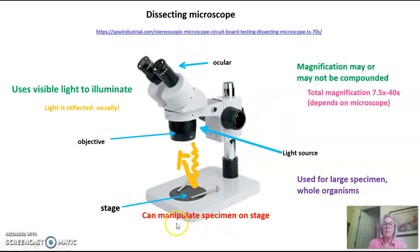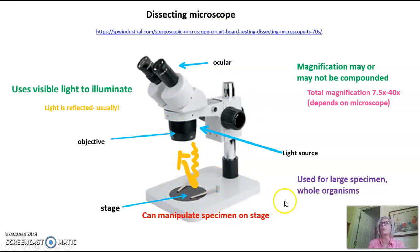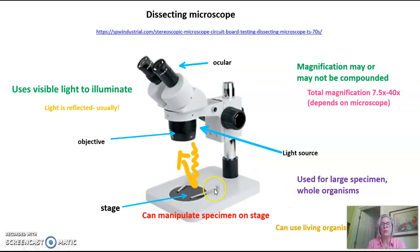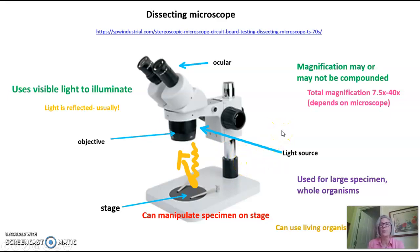You can actually manipulate specimens on the stage. They're called dissecting microscopes because you can dissect dead things while looking at them through the microscope. But you can also use this for living organisms — you can look at a flower, a frog, all sorts of large things — because the specimen doesn't have to be thin and placed on a slide like it does for a compound microscope.